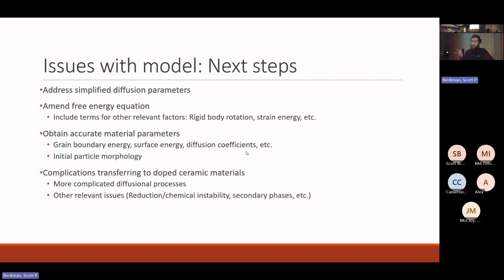Additionally, this model that I was working on modifying is specifically for aluminum. Adapting this to ceramic materials, including the doped ceramic structures we were looking at previously, is going to be even more difficult as they have more complicated diffusional processes and other relevant issues such as reduction or other chemical instability, the possible formation of secondary phases, complicated crystal structures, and other such complications which will need to be included if you want to have as accurate of a phase field model as possible.